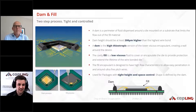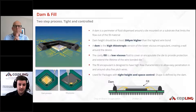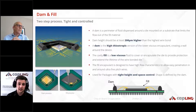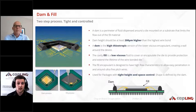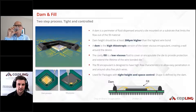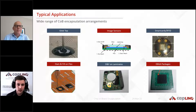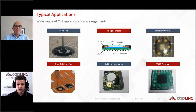The second option for chip-on-board liquid encapsulation is dam-and-fill. You first use a high thixotropic material with high viscosity to set a perimeter around the area you want to protect. This dam must be at least 200 micrometers higher than your highest wire bond, to ensure no visible wires after filling. The second step is filling the cavity with a lower-viscosity material. This allows tight height and space control. Typical applications include image sensors, smart cards, dam-and-fill on flexible circuits, or laminate circuits.